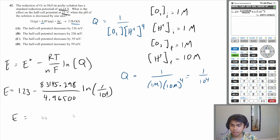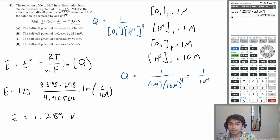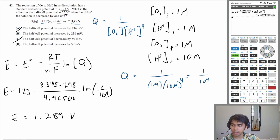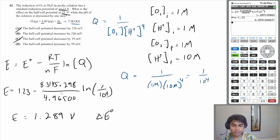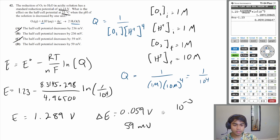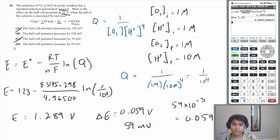Our final cell potential is going to be 1.289 volts. We know the cell potential does not decrease, so we can eliminate A and C. B says the potential increases by 236 millivolts; D says it increases by 59 millivolts. Subtracting the non-standard cell potential minus the initial standard cell potential, our change in E is 0.059 volts — which is 59 millivolts. So our cell potential increases by 59 millivolts, and our answer is answer choice D.